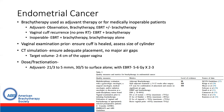Dose and fractionation regimens in the adjuvant setting include 21 Gy in three fractions prescribed to five millimeters, 30 Gy in five fractions to the surface. In conjunction with EBRT, regimens of five to six Gy for two to three fractions have been recommended. The quality measures and metrics include similar DVH constraints for normal organs as well as target coverage.